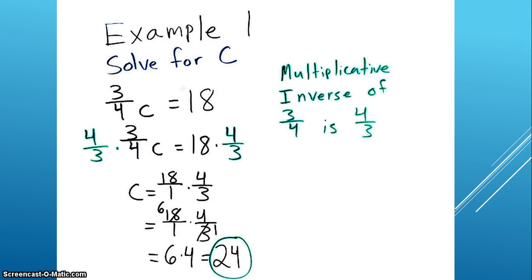In the first example, we have three-fourths c equals 18. The multiplicative inverse of three-fourths is four-thirds, so we're going to multiply four-thirds on both sides. We get c equaling 18 times four-thirds, and we go through some simplification.